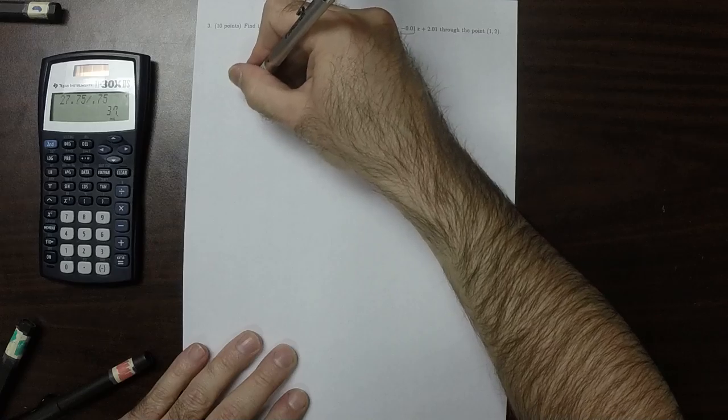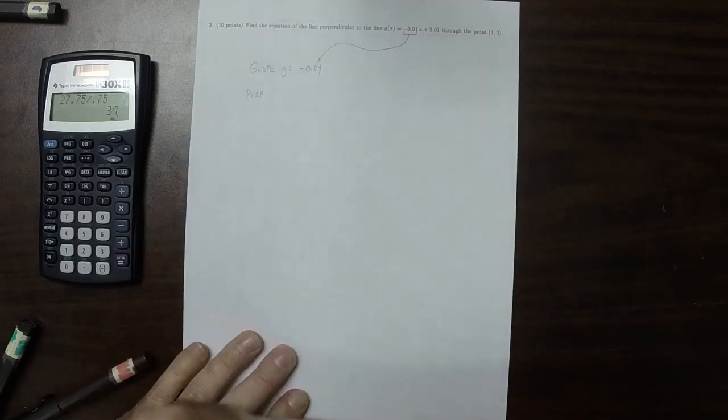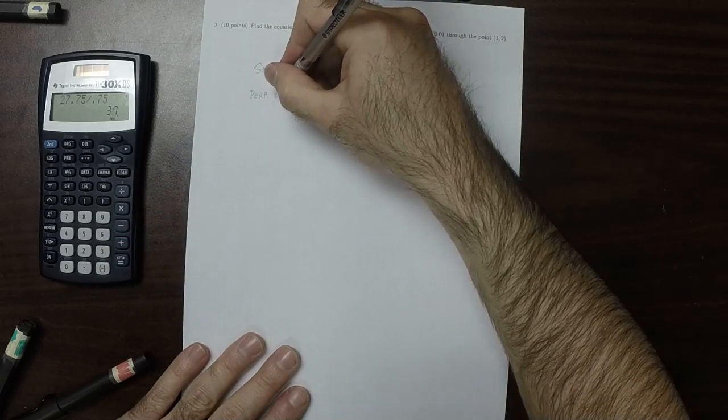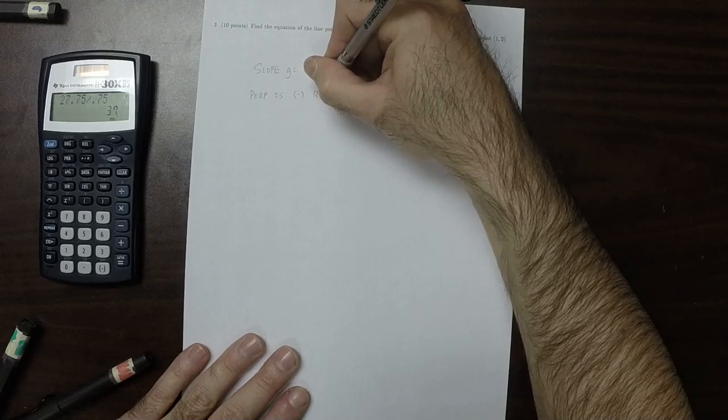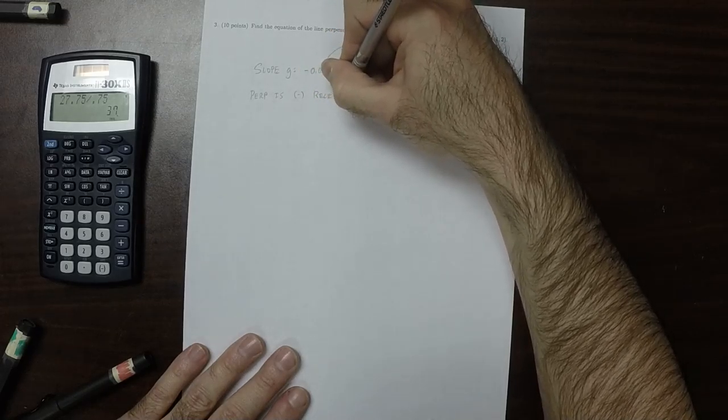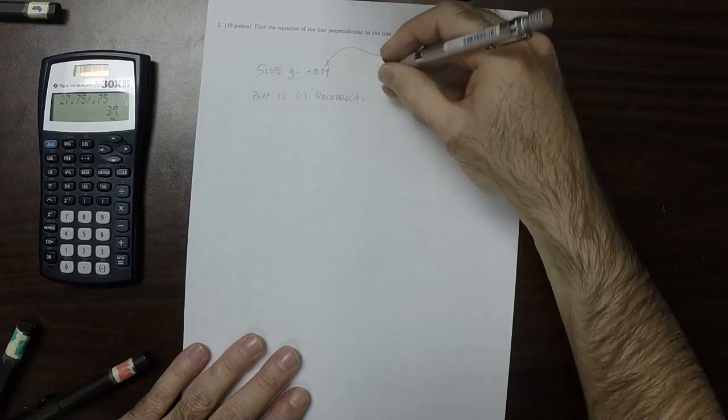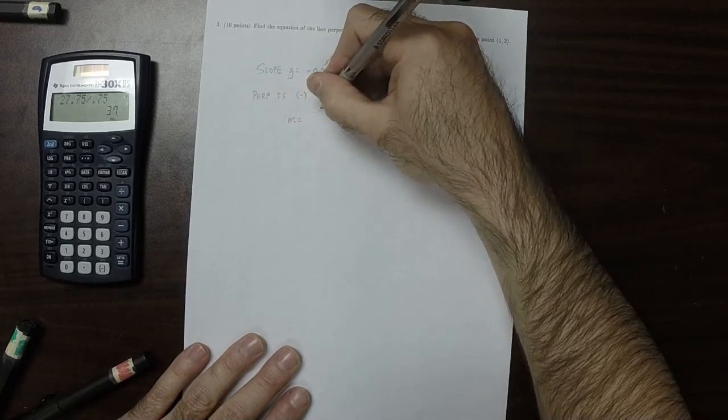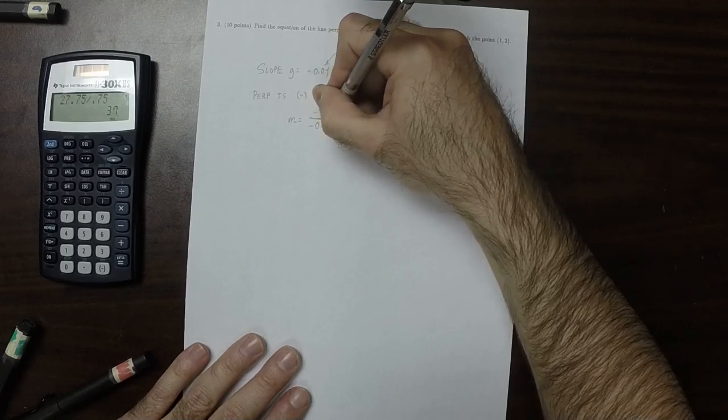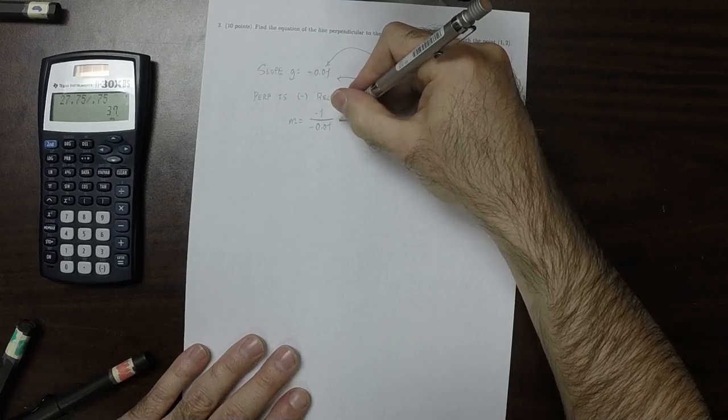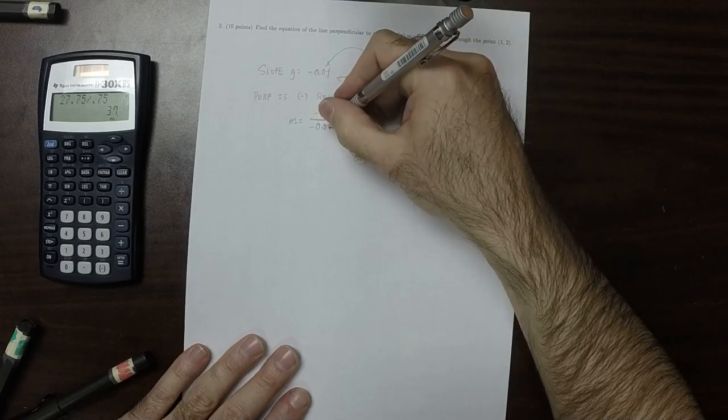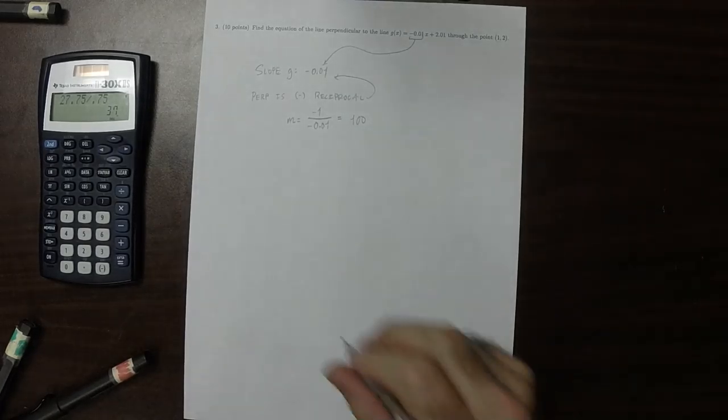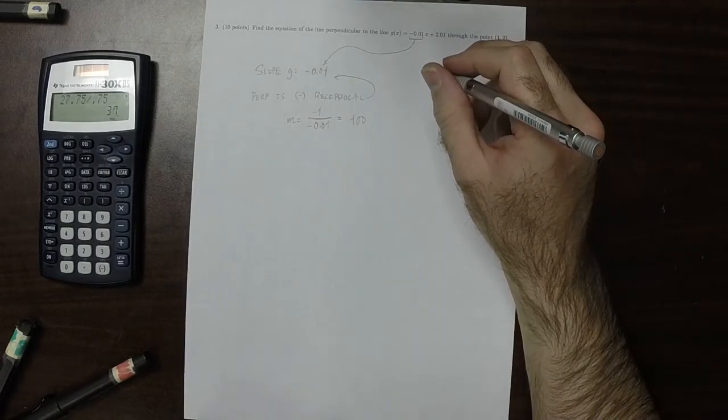The perpendicular slope will be the negative reciprocal of this slope. So the slope that we're looking for is negative 1 over negative 0.01. The negatives cancel, and that's 1 over 0.01, which is 100. So the perpendicular slope is 100.